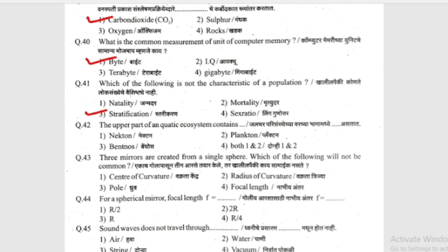The upper part of an aquatic ecosystem contains what? (Jalachar parisanstha cha waracha bhaaga madhe timba timba astar.) Options: neuston, nekton, plankton, benthos, or both 1 and 2. The answer is plankton.